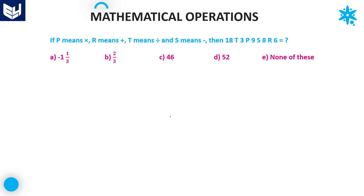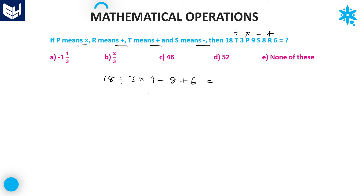Let's move on to the next question. In this problem, P means multiply, R means plus, T means divided by, and S means minus. Substituting all operations: 18 divided by 3 into 9 minus 8 plus 6.